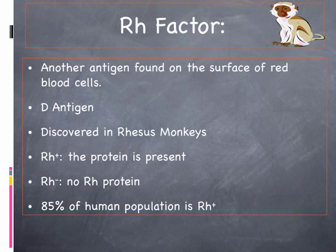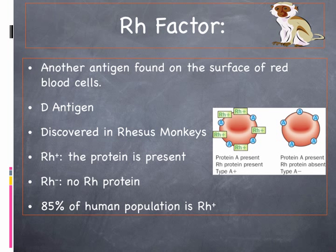It's neither good nor bad — it's just another indicator, just like the A and B antigens are. Approximately 85% of the human population is RH positive, so as we saw in the chart, they're O positive, A positive, B positive. Here's a visual showing a person with blood type A: they have A antigens on the outside of the red blood cell. If they're A positive, they have the RH protein on the outside; if they're A negative, they do not.